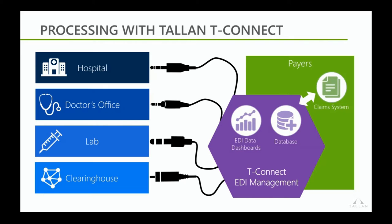We've focused on three core principles developing this product. Number one, speed is king — we've seen so many times where it just takes too long to process a massive enrollment file or large claims. Number two, manageability of the file — it's one thing to parse it, but we need to be able to act on every data field and metadata, whether implementing SNP rules, custom enrichment, or custom validation. Number three, transparency — having visibility into the EDI management lifecycle.